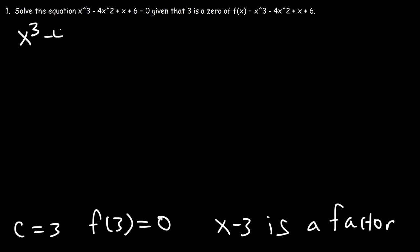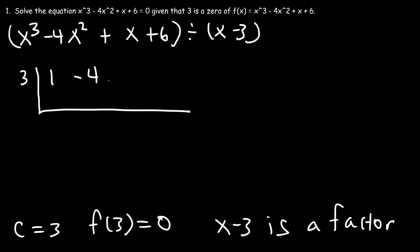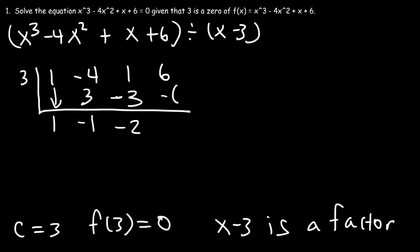Let's find x³ minus 4x² plus x plus 6 divided by x minus 3 using synthetic division. We use c = 3 and write the coefficients: 1, -4, 1, 6. Bring down the 1, multiply: 3 times 1 is 3. Negative 4 plus 3 is negative 1. Then 3 times negative 1 is negative 3. 1 plus negative 3 is negative 2. 3 times negative 2 is negative 6, giving a remainder of 0, which confirms f(3) = 0.